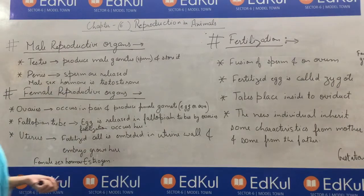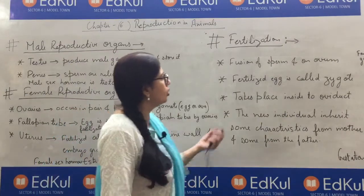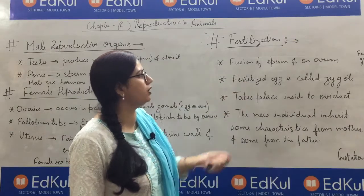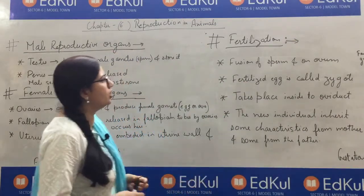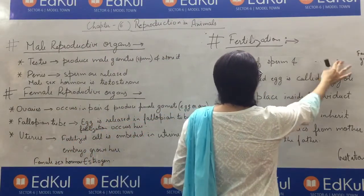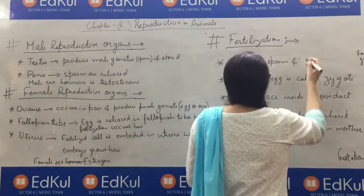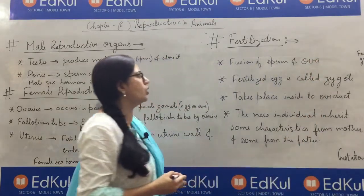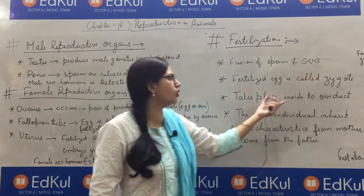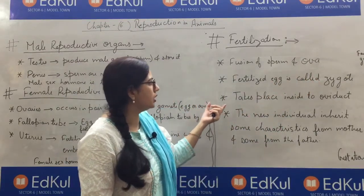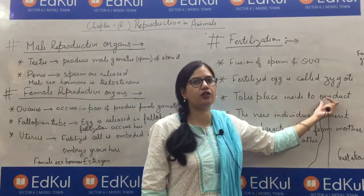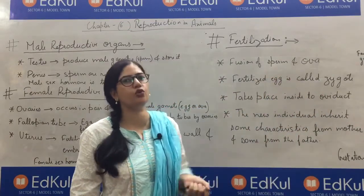Now, fertilization. As we all know, fertilization is the fusion of the female gamete — ovum or ova — and the male gamete. They fuse together and give rise to a zygote. After fertilization, a zygote is formed. This fusion takes place in the oviduct, where sperm and ovum fuse together.